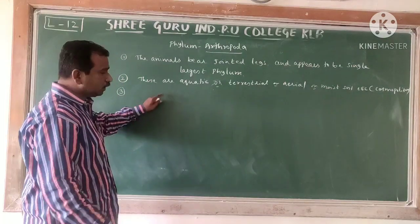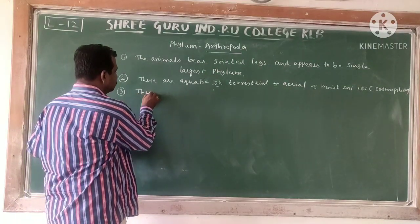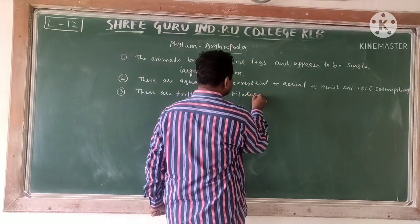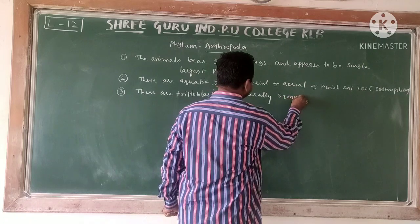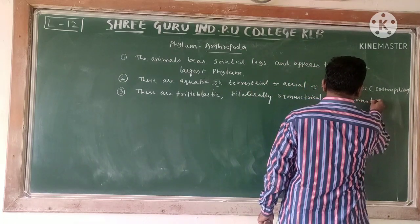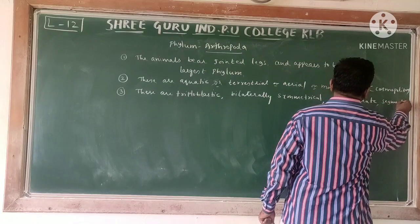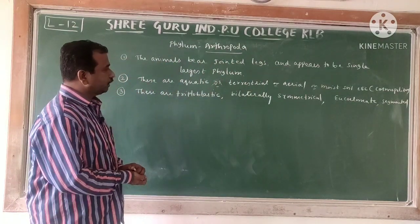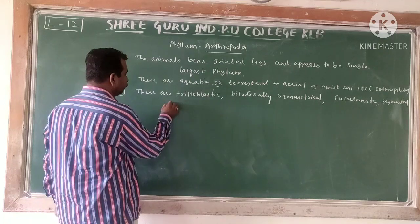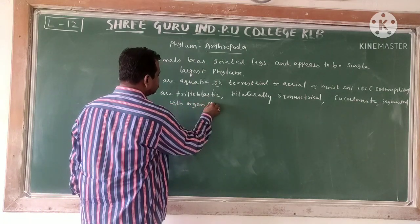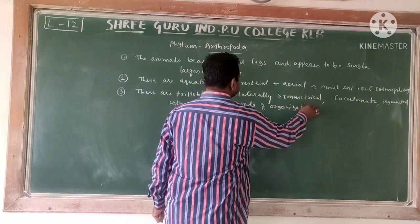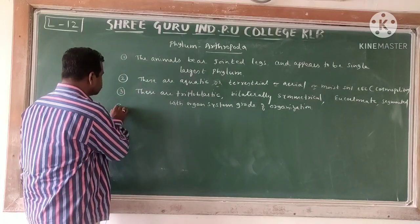Third character: these are triploblastic, bilaterally symmetrical, coelomate, and segmented — with organ system grade of organization. These characters we have studied in the case of Annelida also, and here also we can see that they are coelomate and segmented with organ system grade of organization.